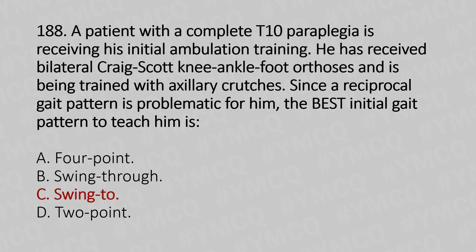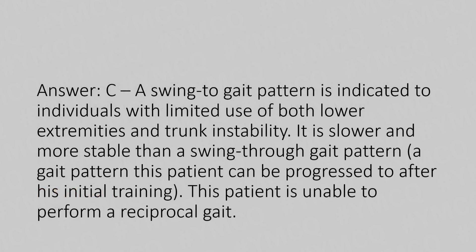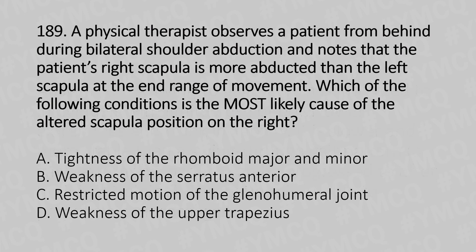The answer is Option C: swing-to. A swing-to gait pattern is indicated for individuals with limited use of both lower extremities and trunk instability. It is slower and more stable than the swing-through gait pattern, which is a pattern this patient can progress to after initial training. This patient is currently unable to perform a reciprocal gait.